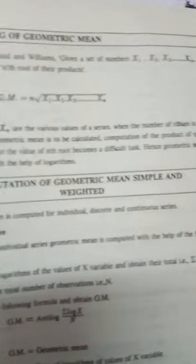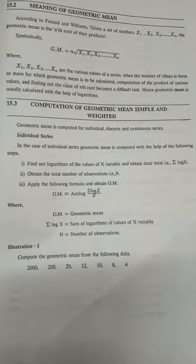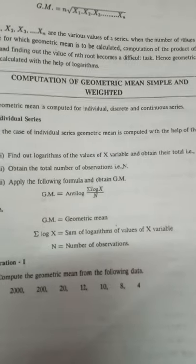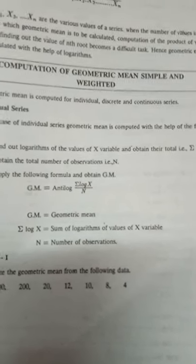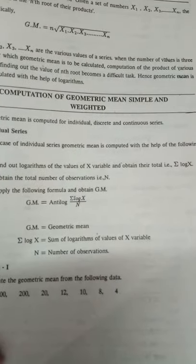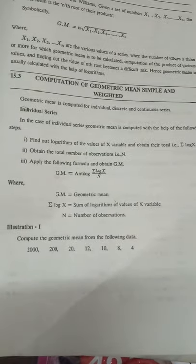In case of individual series, the formula for calculating geometric mean is antilog of sigma log x by n. Antilog of sigma log x by n. Let us see, my dear students, how to see logarithm for this simple question.